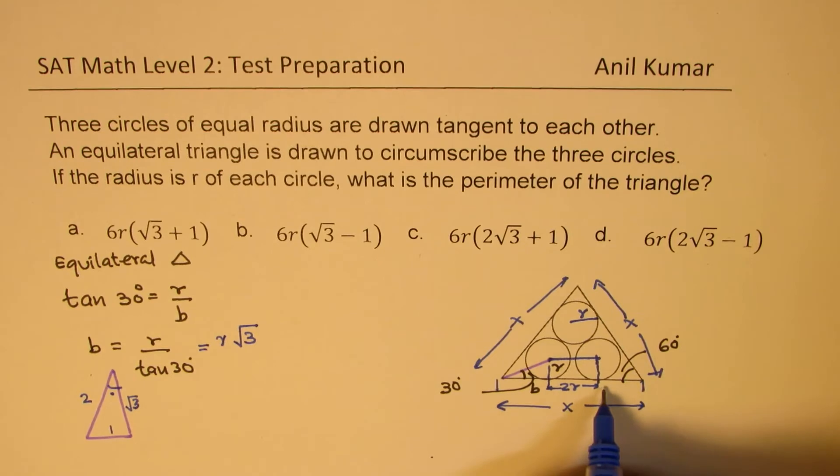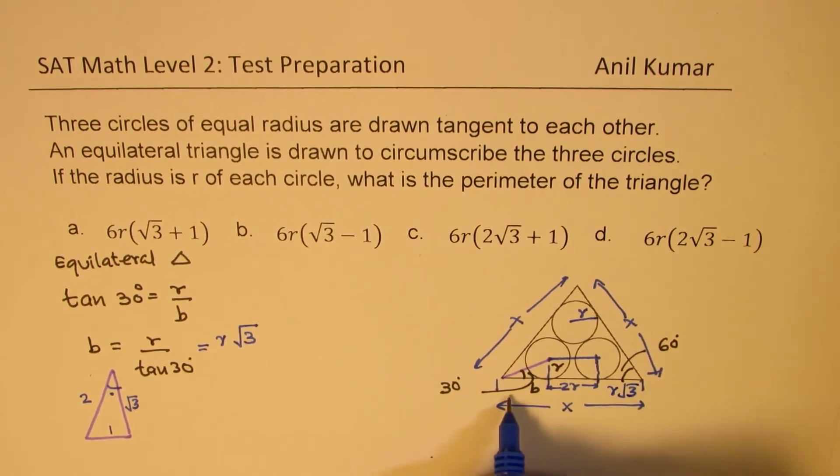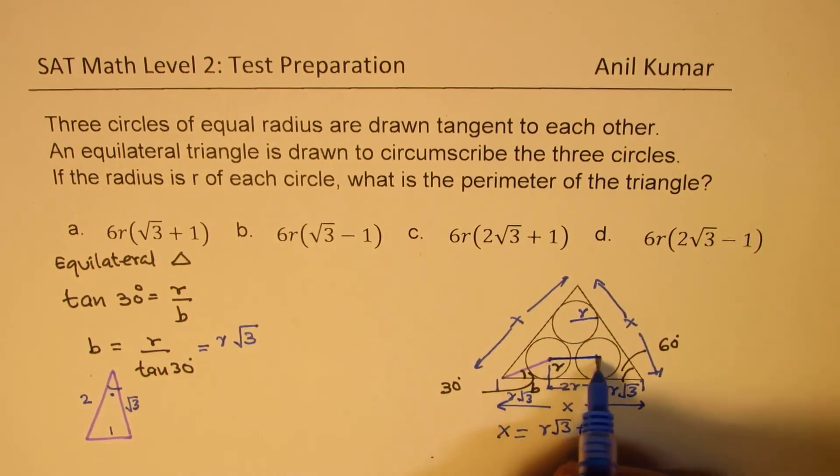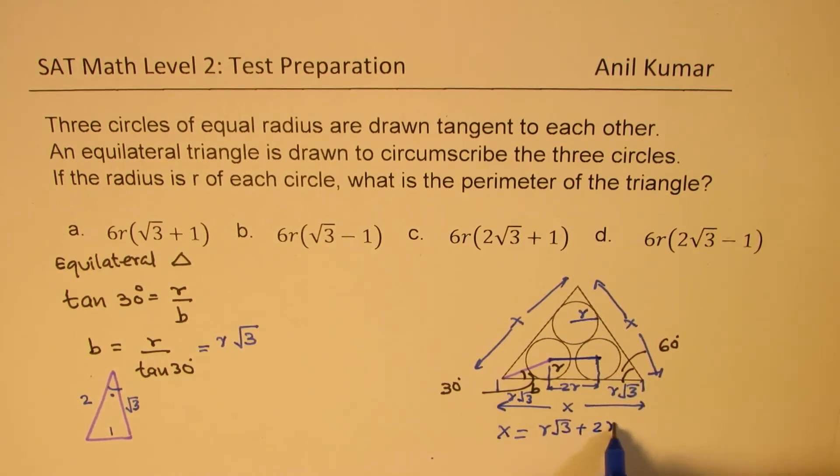So this side B and this side B is R times square root 3. This is also R times square root 3. So we get the value of X as equals to R times square root 3 plus center to center is 2 times R plus R times square root 3. Perfect. So that becomes one value of X.